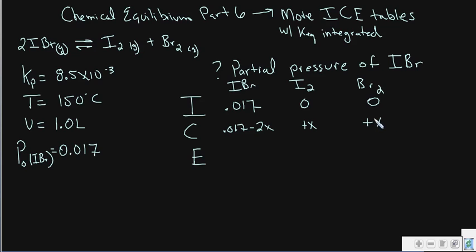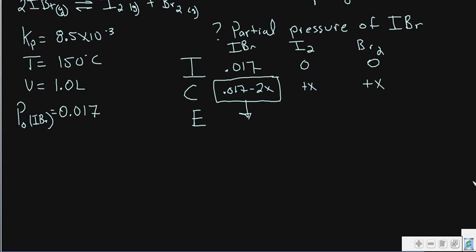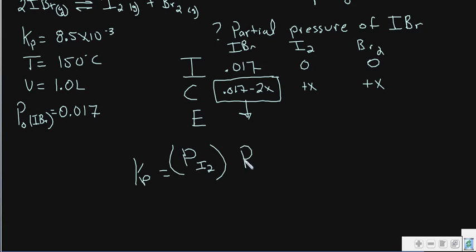At equilibrium, those expressions fill in the bottom row of the ICE table. Now we look at what Kp tells us — the partial pressure constant expression. Kp equals the partial pressure of the products: the partial pressure of iodine times the partial pressure of bromine, all divided by the partial pressure of iodine bromide squared. That is our partial pressure equilibrium constant expression.